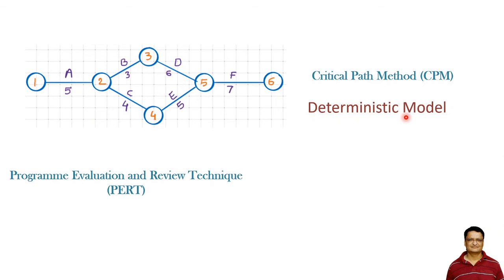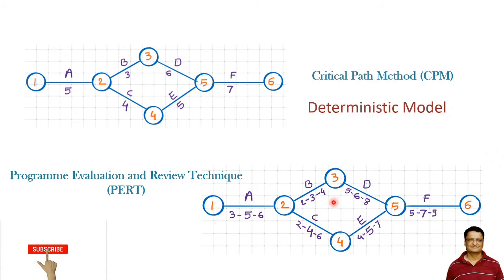Whereas in PERT, for the same activities, we consider three different time estimations. The three represents the optimistic time estimation, meaning if everything goes right and conditions are favorable, the activity will be completed in three days. If everything is normal, it will be completed in five days.